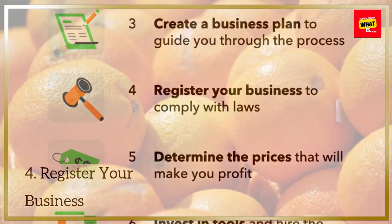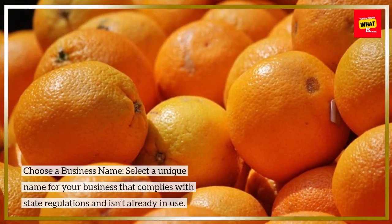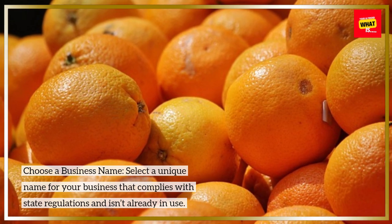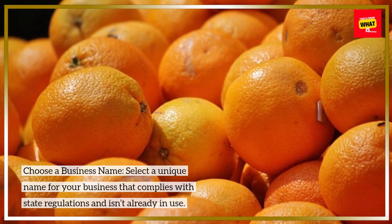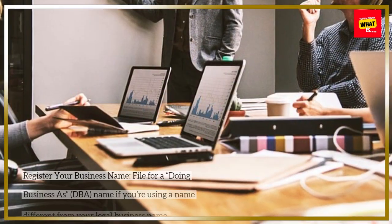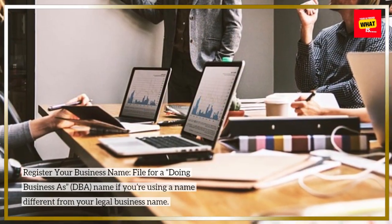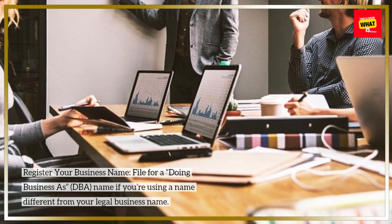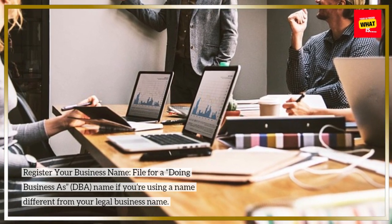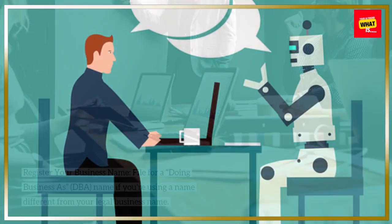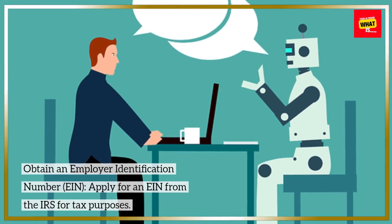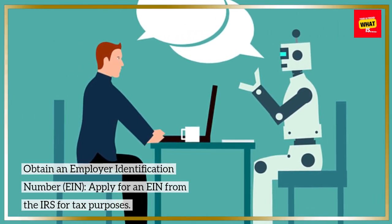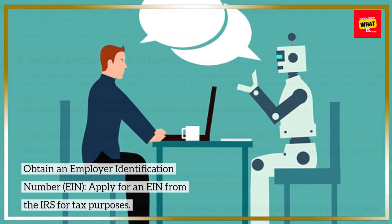Step 4: Register Your Business. Choose a business name — select a unique name that complies with state regulations and isn't already in use. Register your business name: file for a Doing Business As (DBA) name if you're using a name different from your legal business name. Obtain an Employer Identification Number (EIN) from the IRS for tax purposes.